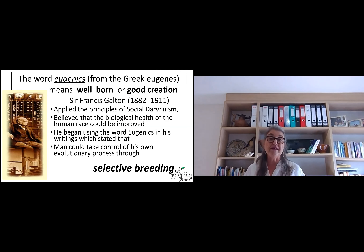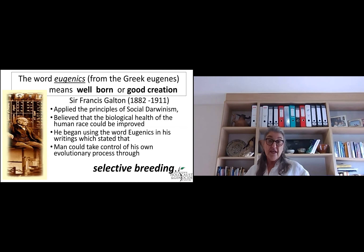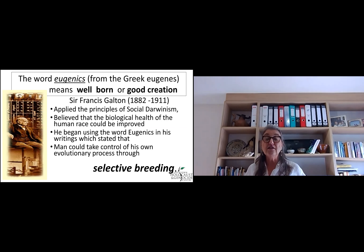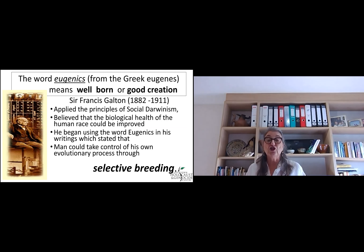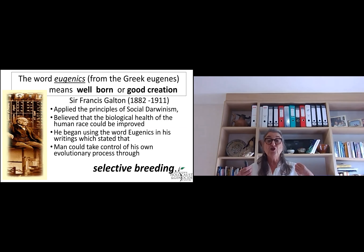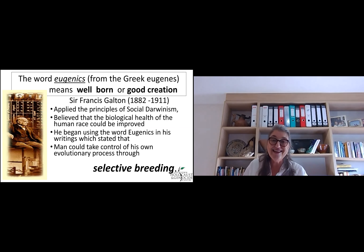Where does all this begin? The word eugenics comes from the Greek, which means well-born, or a good creation — something that sounds positive. The first person to coin the term was Sir Francis Galton. Social Darwinism was out there, and he applied the principles of social Darwinism to the belief that the biological health of human beings could be improved — that we as human beings could take control of our own evolution, and we could do this by selective breeding.